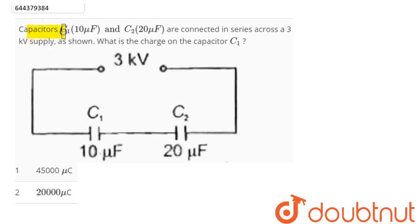Question: Capacitors C1 10μF and C2 20μF are connected in series across a 3kV supply as shown. What is the charge on the capacitor C1?